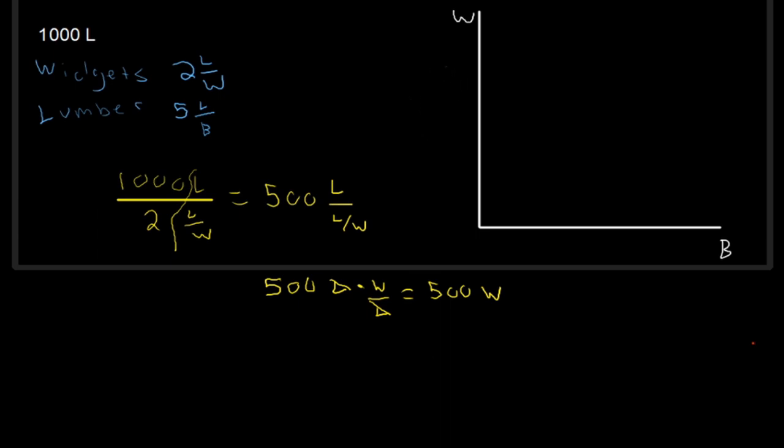So let's go put that up here. We have, as an extreme here, 500, as the amount of widgets we could produce if we put all 1,000 workers into that production.